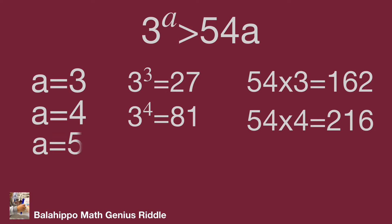When a equals 5, then 3 power 5 equals 243. 54 times 5 equals 270. So 3 power 5 is less than 54 times 5.